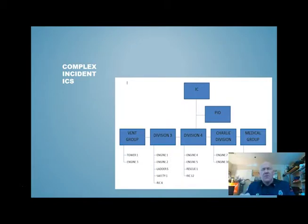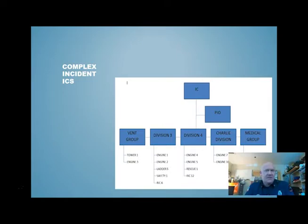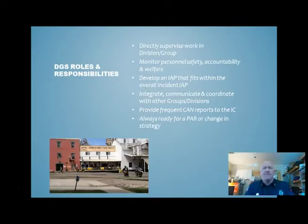Here's another visual for a more complex incident — this could be a high-rise with some other structures involved. In this one we've got a vent group, division three (geographical), division four (geographical), charlie division, and then a medical group. A good mix of divisions and groups, which we could have on any type of complex incident.